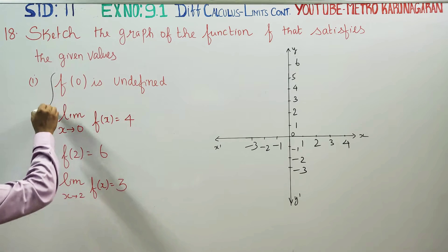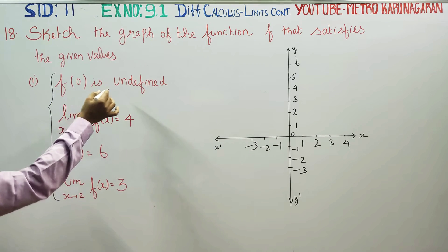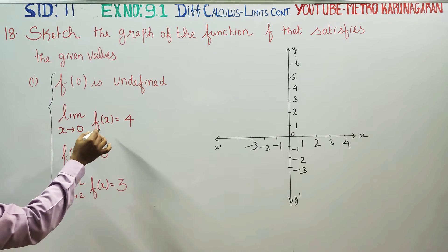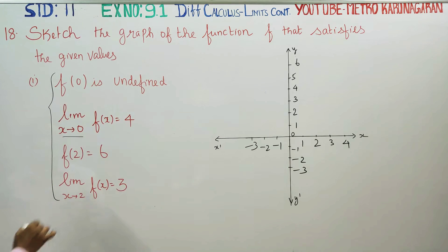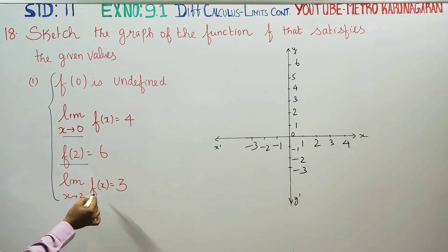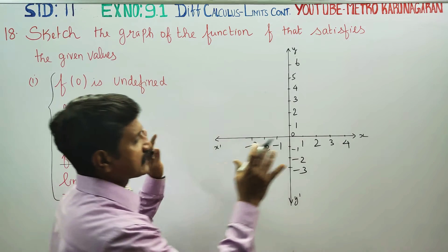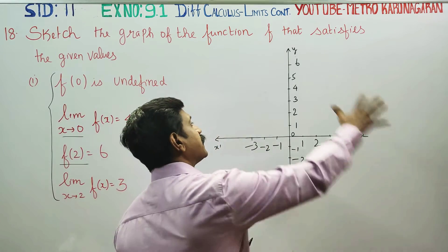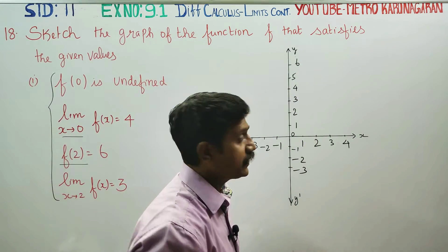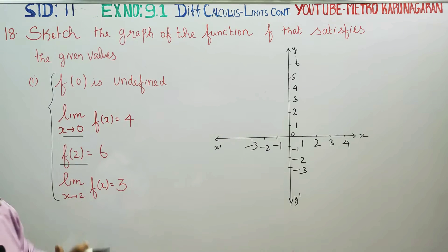In the function f: f(0) is undefined; the limit of f at x equal to 0 exists; f(2) is equal to 6; and the limit as x approaches 2 of f(x) is equal to 3. Using this information on the x-axis and y-axis, you can plot the graph and satisfy all the given conditions.